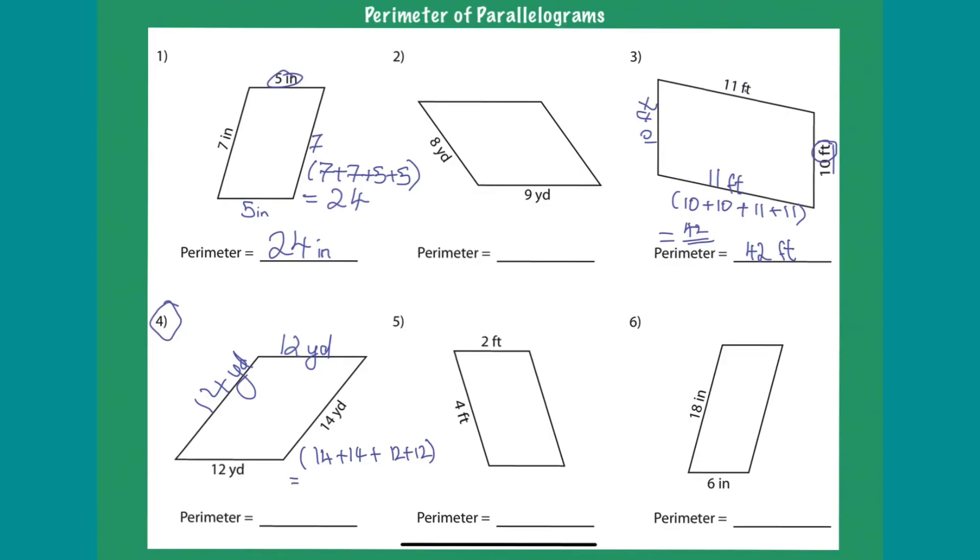So here you go. Fourteen plus fourteen is twenty-eight. Twenty-eight plus twelve is forty. Forty plus twelve here is fifty-two. So your final answer here is fifty-two yards.